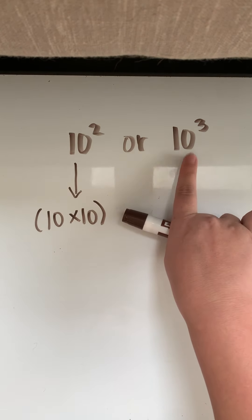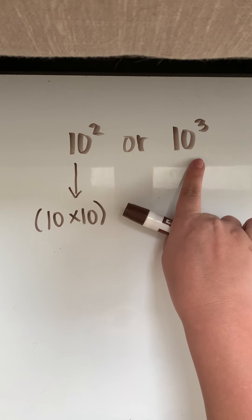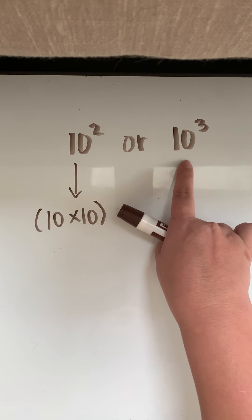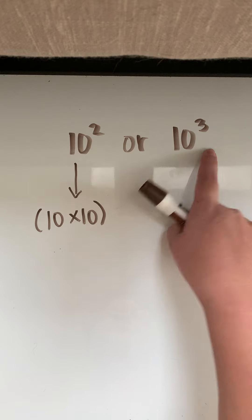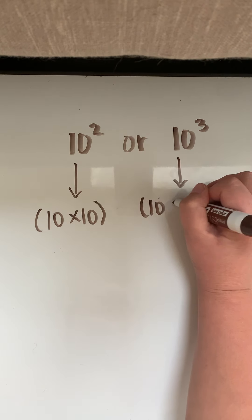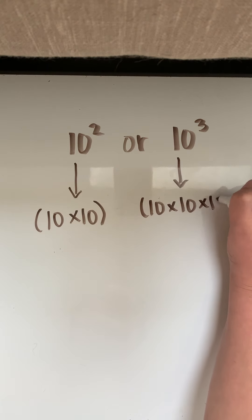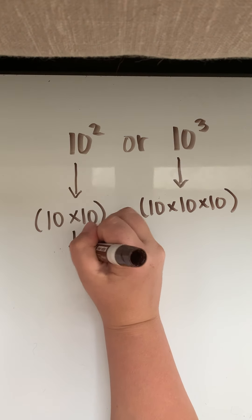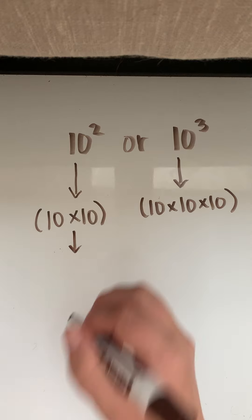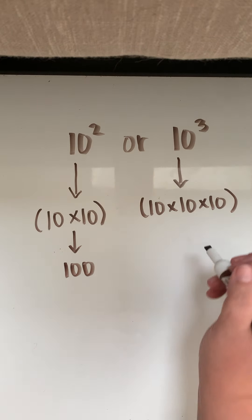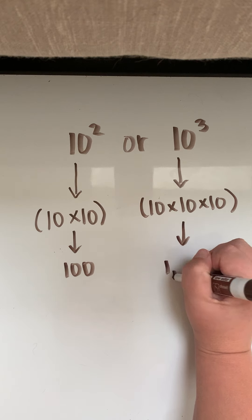This is not 10 times 3. When you have a number to a power, it's basically saying you have this base number that many times. So if I were to rewrite this, it would be 10 times 10 times 10. And then we would know that 10 times 10 would become 100, and 10 times 10 times 10 would become 1,000.